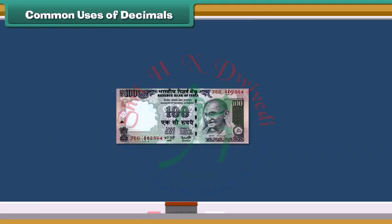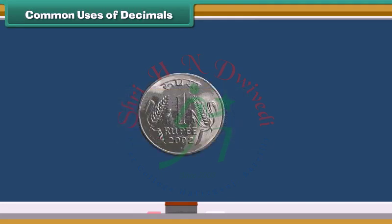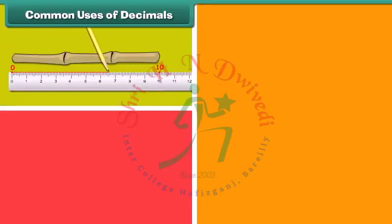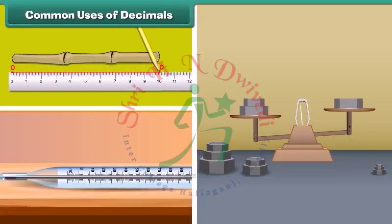Do you know, one rupee is just one hundredth of a hundred rupee. Isn't it interesting? We can also use decimals for the measurement, weight and temperature. Therefore, decimals are really very important.